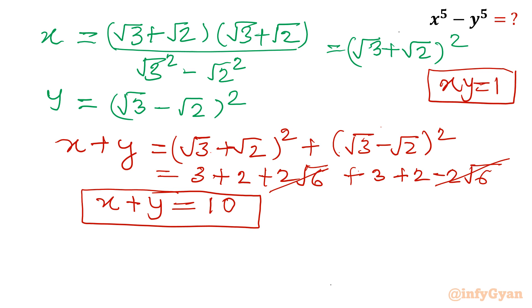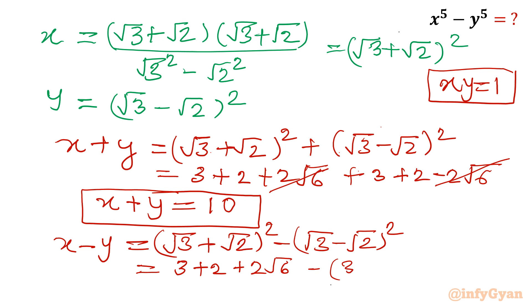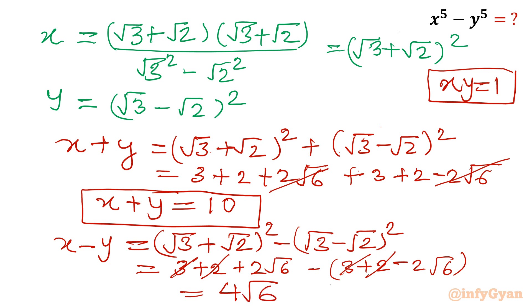For x minus y: (√3 + √2)² minus (√3 − √2)². Expanding gives 3 + 2 + 2√6 minus 3 minus 2 plus 2√6, the constant terms cancel and we get 4√6. So x − y = 4√6.